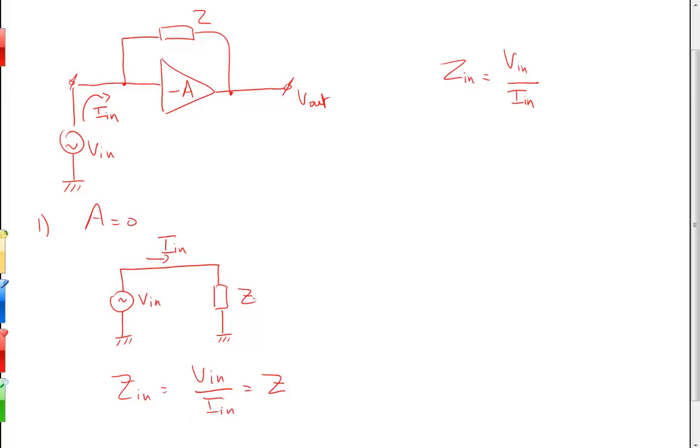Now assume that the voltage gain is equal to one. The circuit simplifies to this. So what's the input impedance? Well, the input impedance is calculated in the same way.